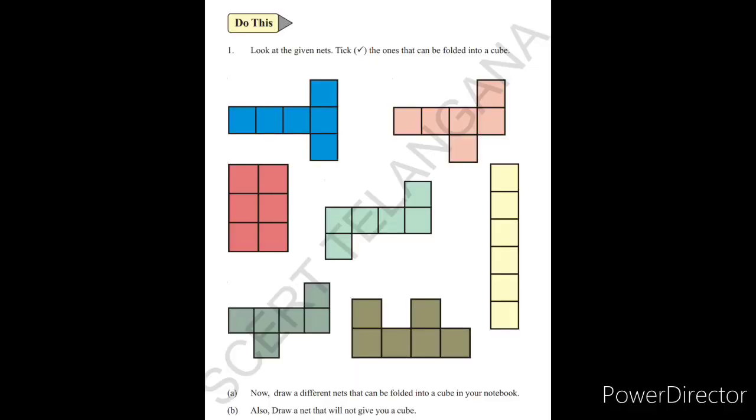Next page. Do this. Look at the given nets. Tick the ones that can be folded into a cube. These you try to draw on a paper, all these cut outs and try to make a cube with them. Here I have already done and ticked them which we can make cube. So you try yourself practically and recheck here.